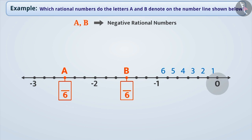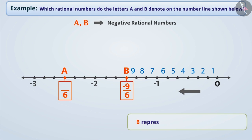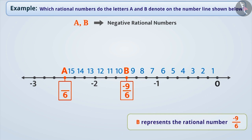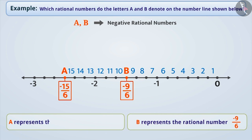Since the position of B is 9 units to the left of 0, the numerator of B is minus 9. Therefore, the letter B represents the rational number minus 9 by 6. Similarly, A's position is 15 units to the left of 0, so the numerator of A is minus 15. As a result, the letter A represents the rational number minus 15 by 6.